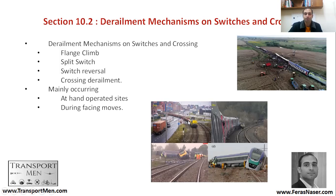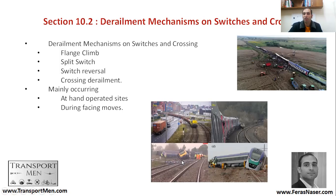Switches and crossings accidents mainly happen at hand-operated sites. If a site was operated by hand and a barrier was managed manually, this could result in failure. Now everything is automated. Another cause is during facing moves — if the train is facing the switch, it might result in a derailment.